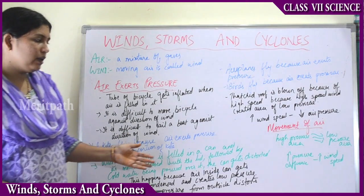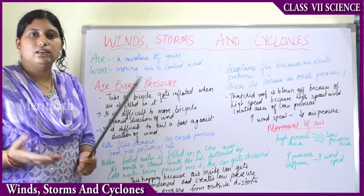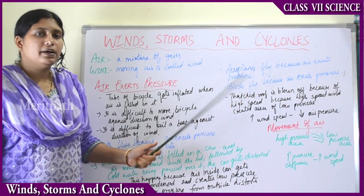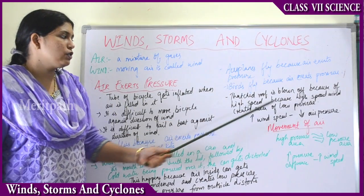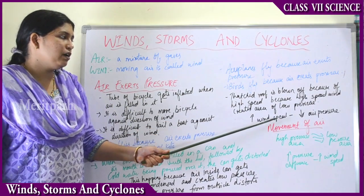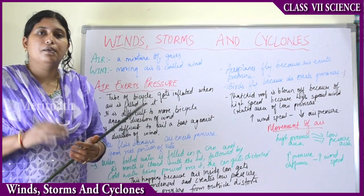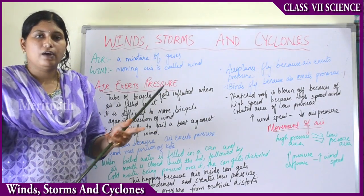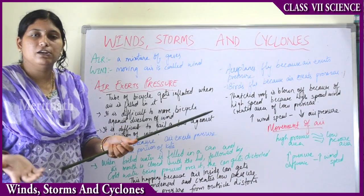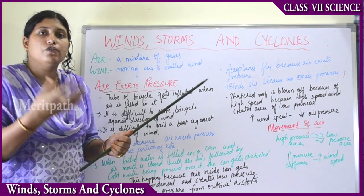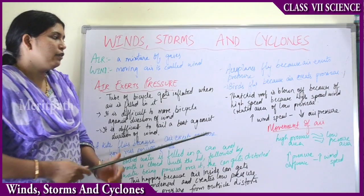Aeroplanes and birds fly in the air because air exerts pressure. A thatched roof is blown off during high-speed winds because high-speed wind creates an area of low pressure. During a high windy atmosphere, the roofs of huts get blown away — high-speed air creates low pressure, and a suction mechanism causes the roof to be blown off.